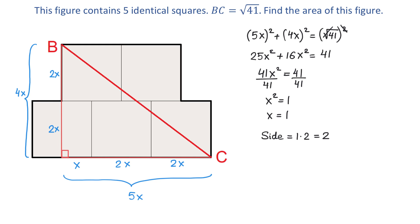Now, to find the area of 1 square, we need to multiply 2 by 2. And 2 by 2 will be equal to 4 square units.